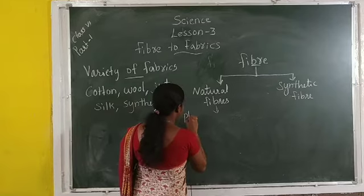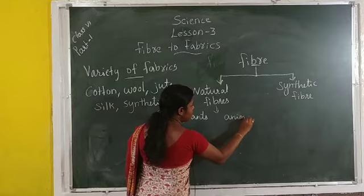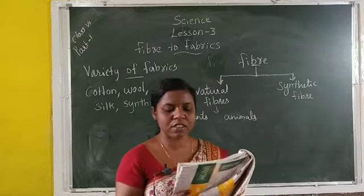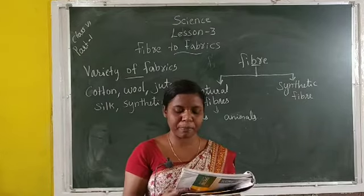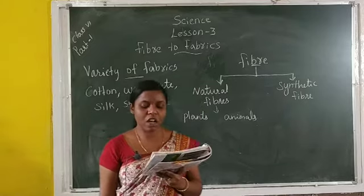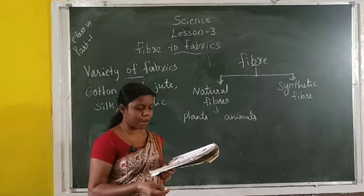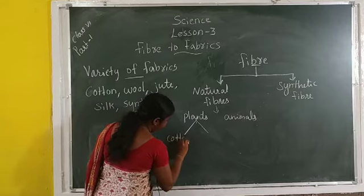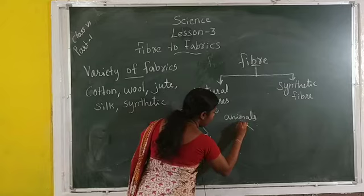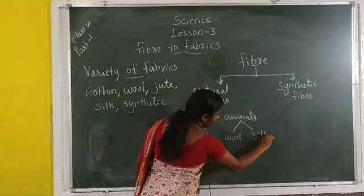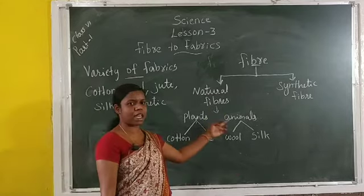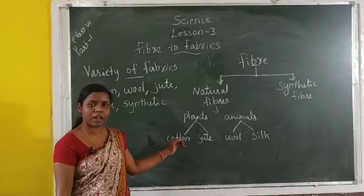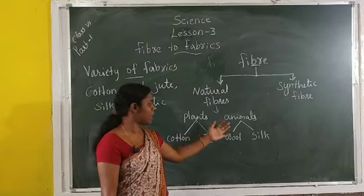The fibers of some fabrics such as cotton, jute, silk, and wool are obtained from plants and animals — these are called natural fibers. Cotton and jute are examples of plant fibers. Wool and silk are examples of animal fibers. Wool comes from sheep, goats, camels, and rabbits.